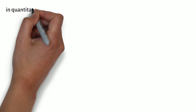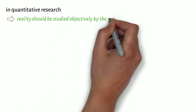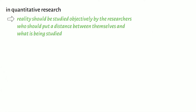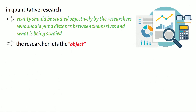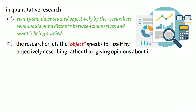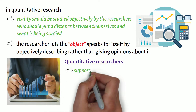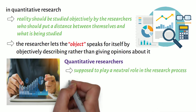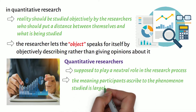Hence, in quantitative research, reality should be studied objectively by the researchers who should put a distance between themselves and what is being studied. In other words, in quantitative research, the researcher lets the object speak for itself by objectively describing rather than giving opinions about it. This explains why quantitative researchers are supposed to play a neutral role in the research process. Hence, the meaning participants ascribe to the phenomenon studied is largely ignored in quantitative studies.